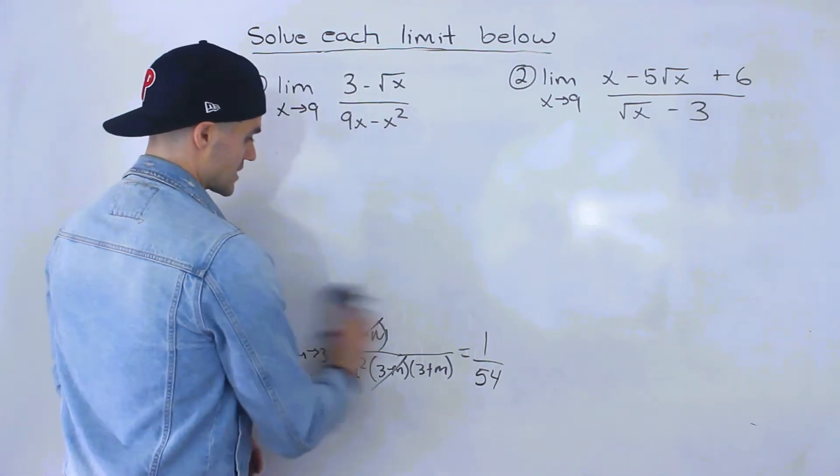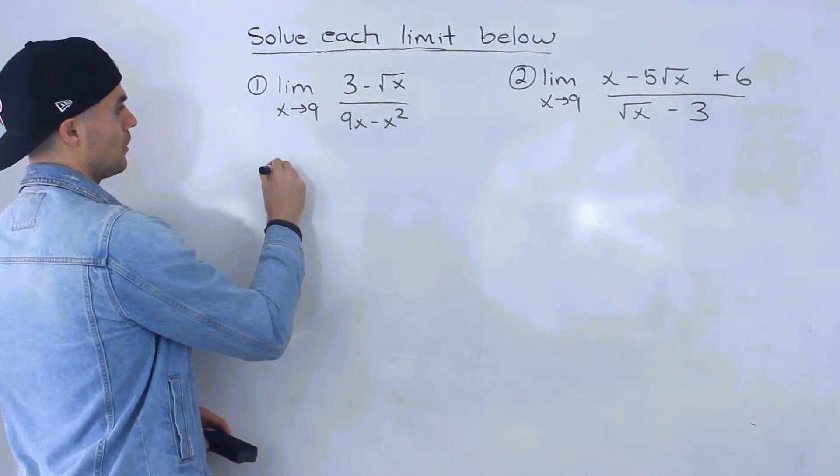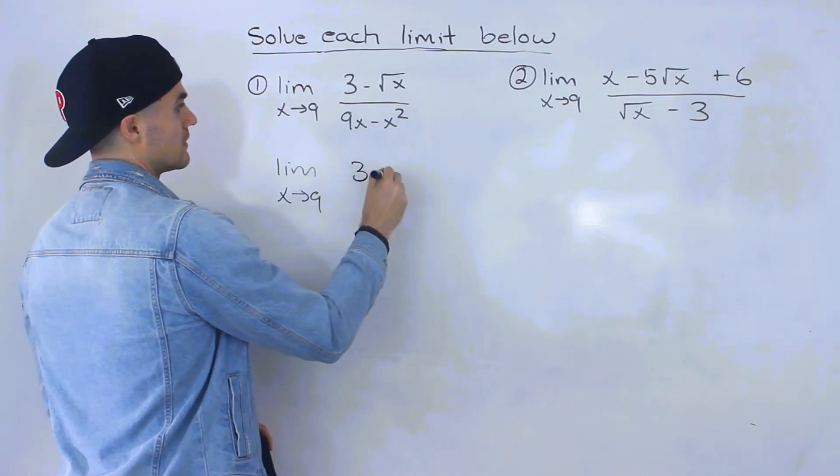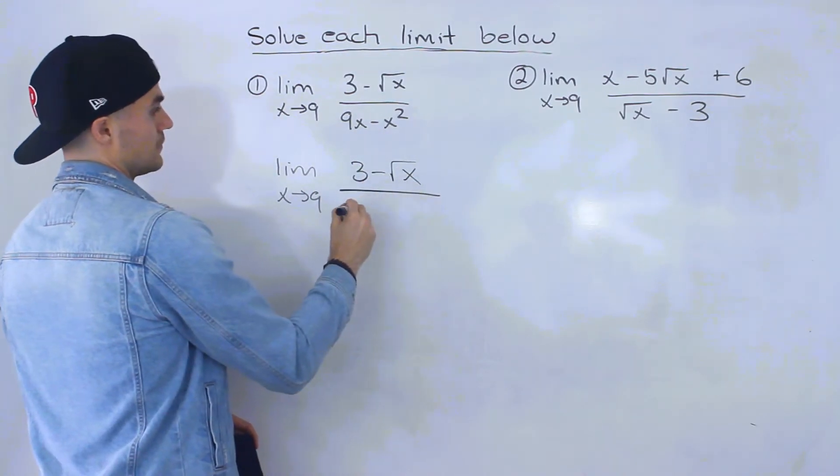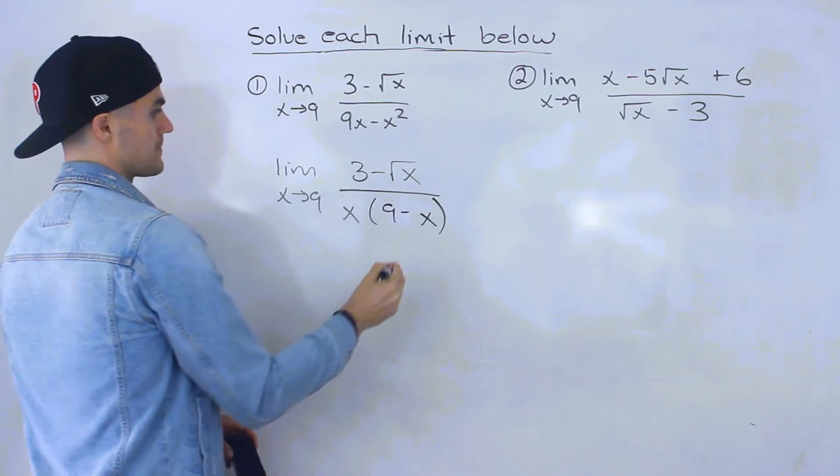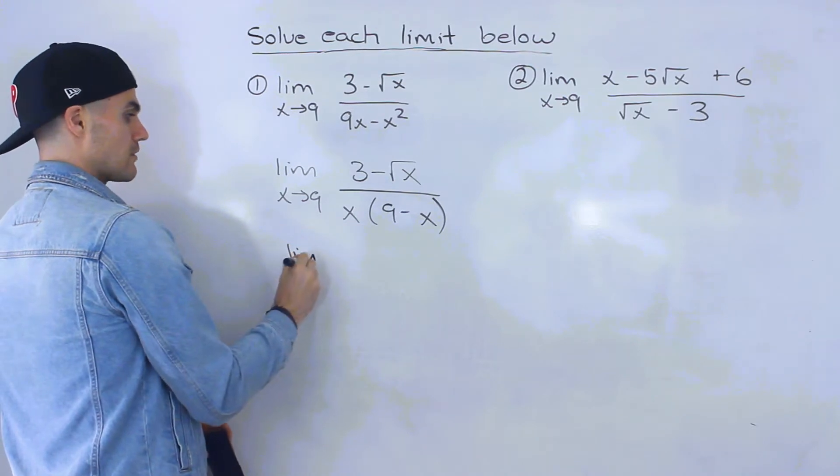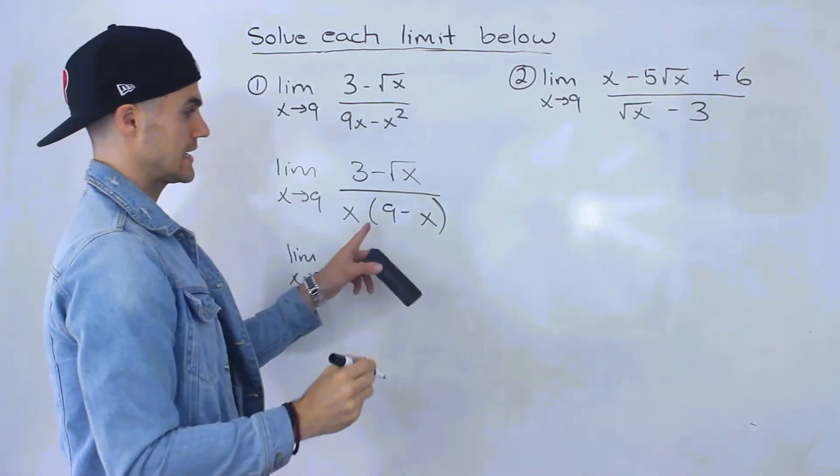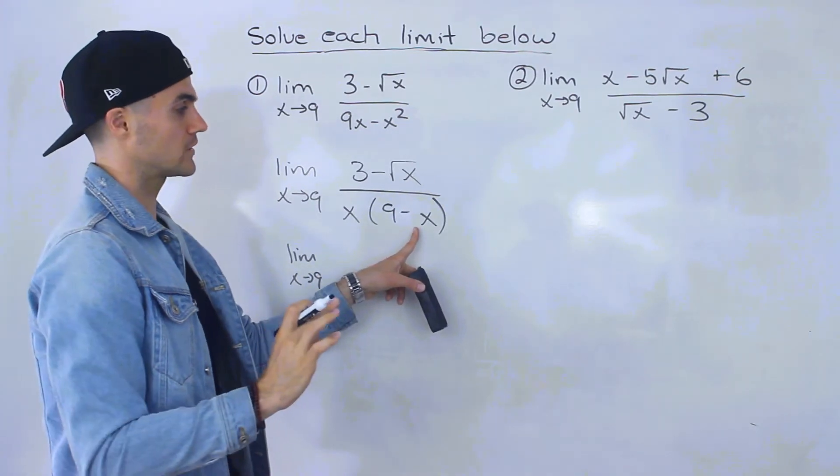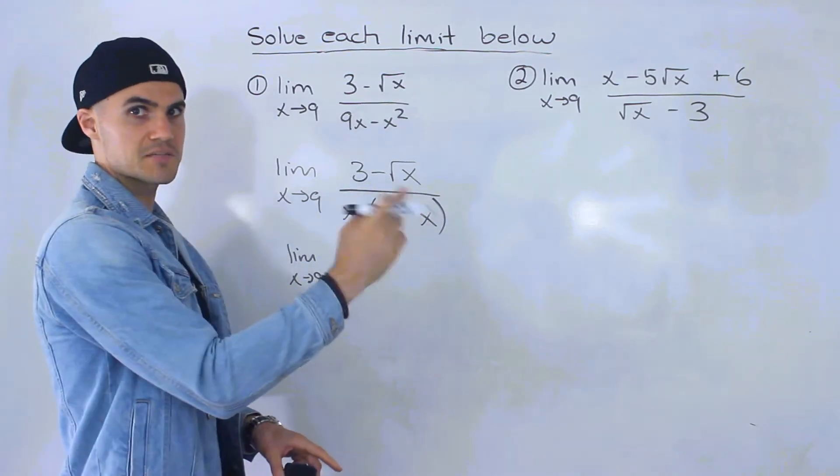The third method is just factoring. We can leave everything as is. We have 3 minus root x. We could factor out an x and be left with 9 minus x. You may not think that's a difference of squares because it's 9 minus x. Usually when factoring a difference of squares, there's an even number in the exponent.